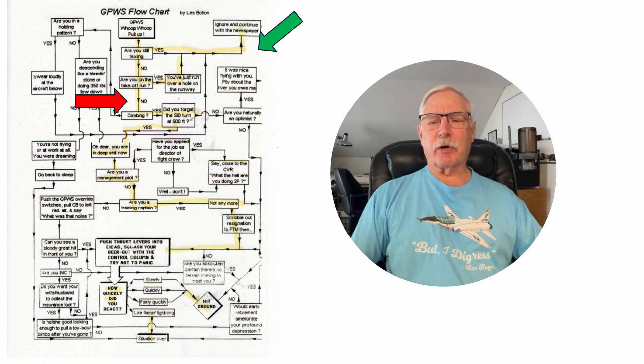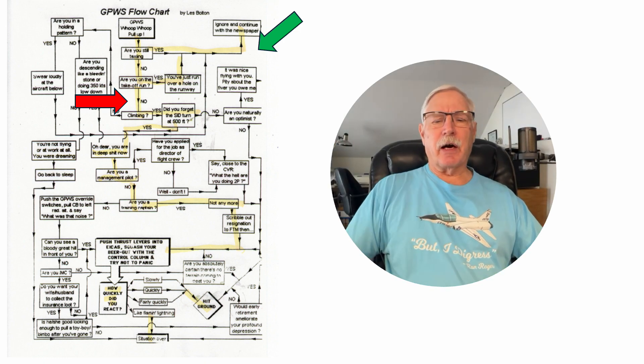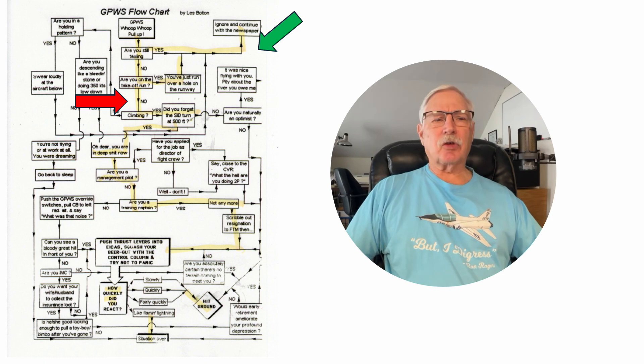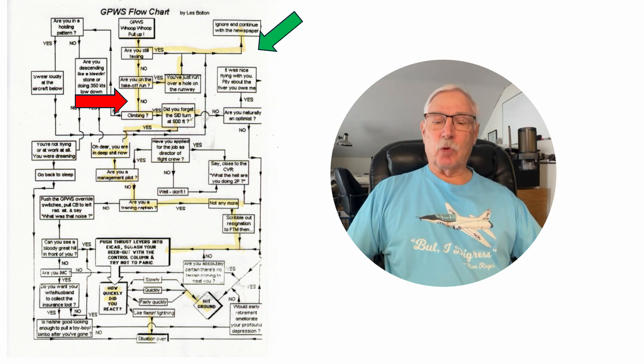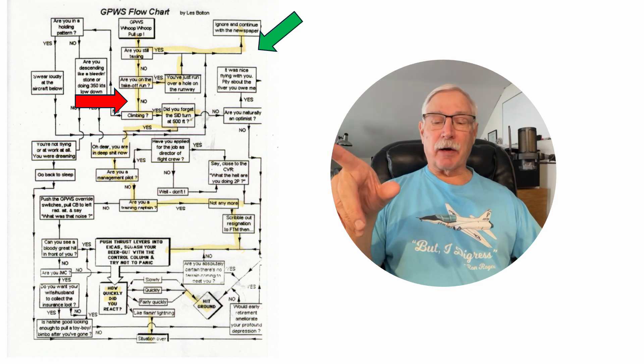Okay let's take a look at the first one with the green arrow. You get the whoop whoop pull up and it's are you still taxiing and it's yes, ignore and continue with the newspaper. Okay now let's look at a more serious situation following the red arrow. Are you still taxiing? No. Okay are you on takeoff run? Well if it's yes then we go back to the green arrow and you've just run over a hole in the runway, ignore and continue with your newspaper.